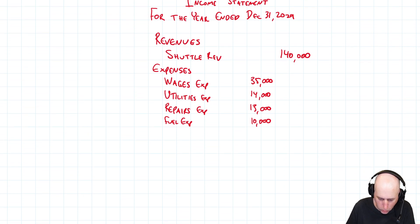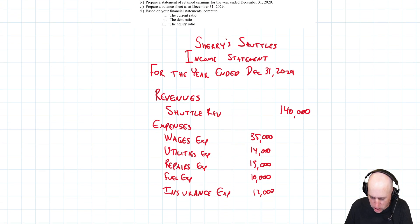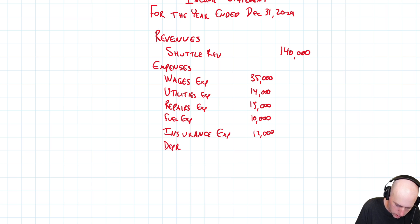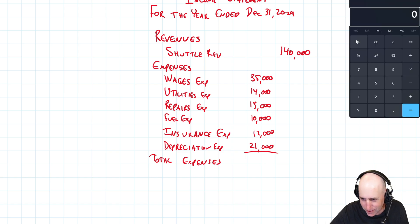Now you're going to notice format choices I make. If I have a big long list of numbers, I list them on the left and I total to the right. Follow your professors format conventions, but this is the way I'm going to encourage you to do it. So wages expense next is utilities expense, fourteen thousand. Next up is repairs expense, thirteen thousand. And next up is fuel, ten thousand. Next is insurance, twelve thousand. And last up is depreciation, twenty one thousand.